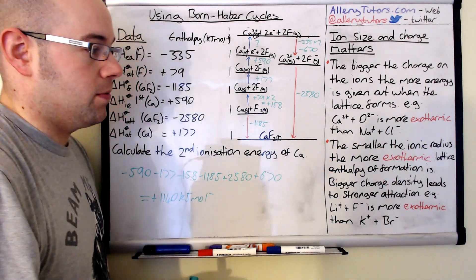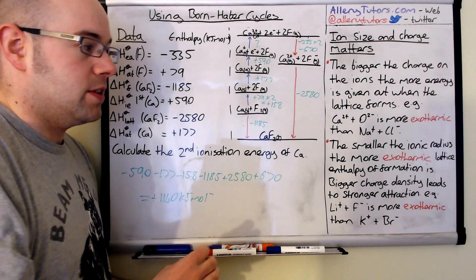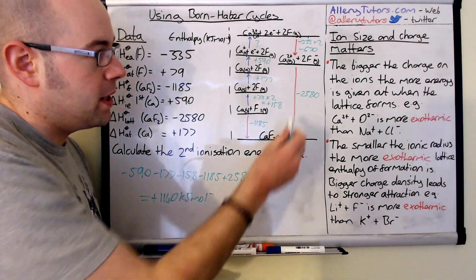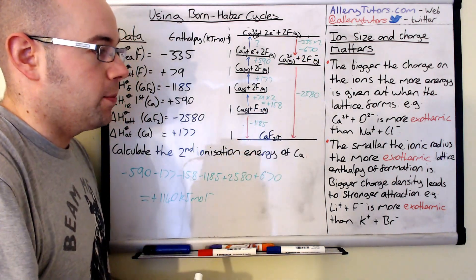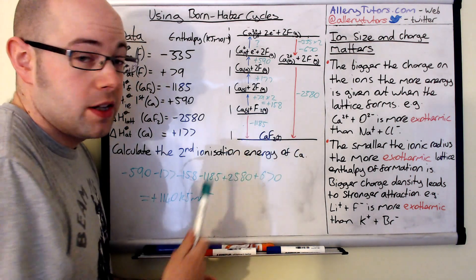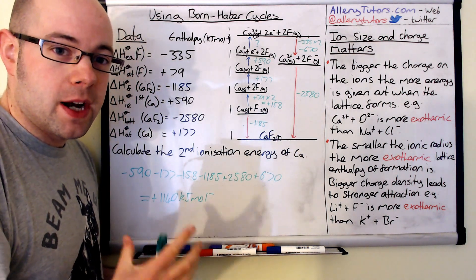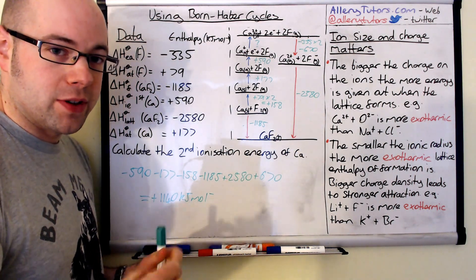And the smaller the ionic radius of the ions then the more exothermic your reaction is going to be for the lattice enthalpy of formation.